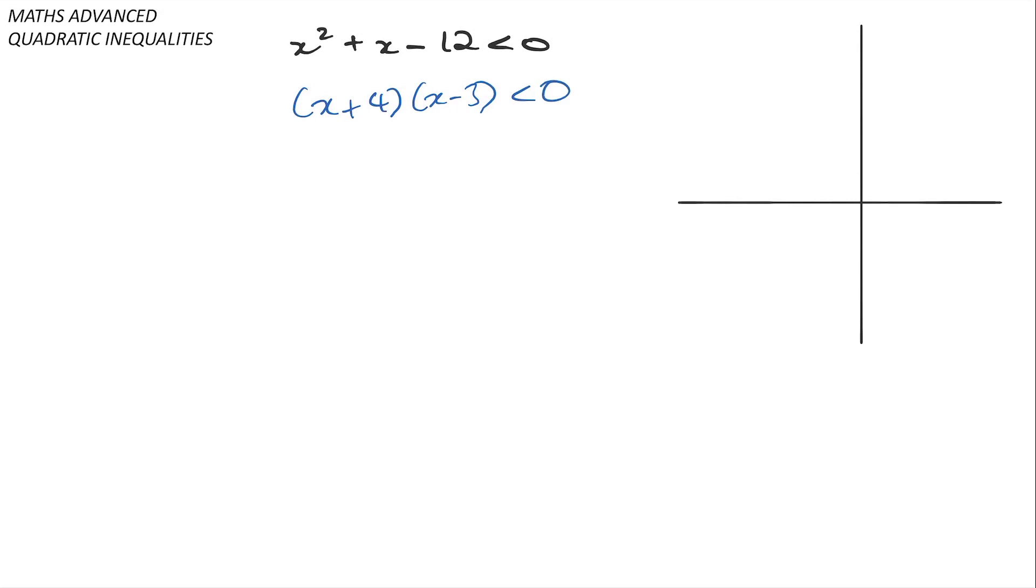but then some people will be like therefore x plus four is less than zero and x minus three is less than zero. Look don't go there.